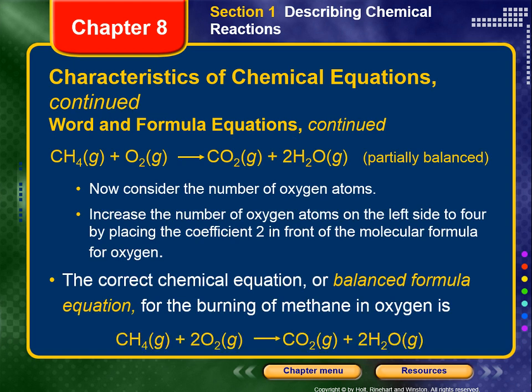It's better than it was, but only partially balanced. We've balanced carbons and hydrogens. Now we consider oxygen: there are two oxygens on the reactant side and four on the product side. We increase the number of oxygen atoms on the left to four by placing a coefficient of 2 in front of O₂. The balanced formula equation for the burning of methane is: CH₄(g) + 2O₂(g) → CO₂(g) + 2H₂O(g).